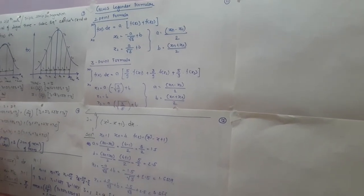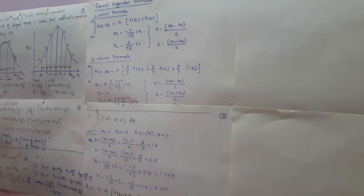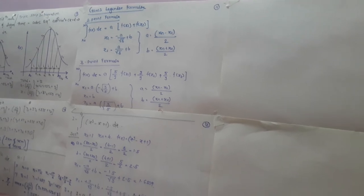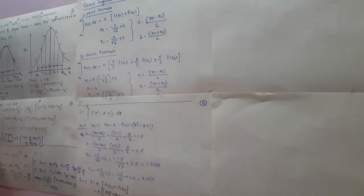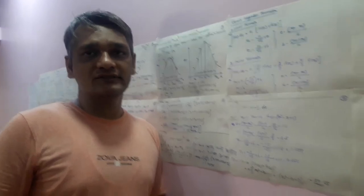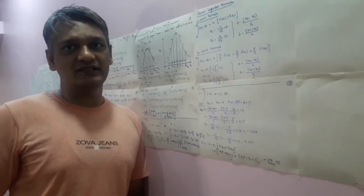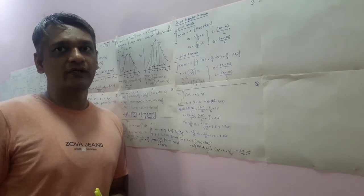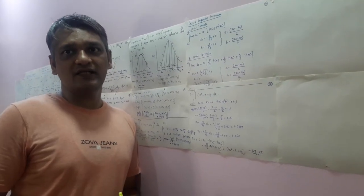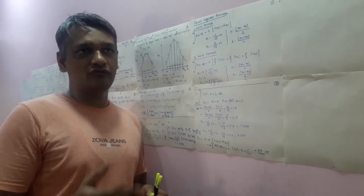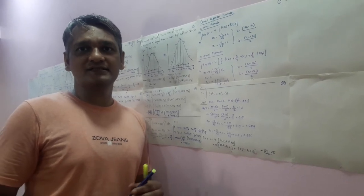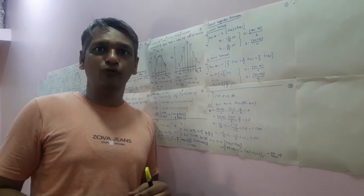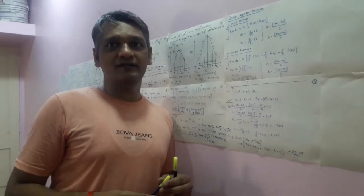This concludes the topic of numerical integration. We have studied five methodologies: the Trapezoidal Rule, Simpson's One-Third Rule, Simpson's Three-Eight Rule, Gauss-Legendre 2-point formula, and Gauss-Legendre 3-point formula. Please try to solve all numerical problems from our assignment and visit our website for further details. Thank you.